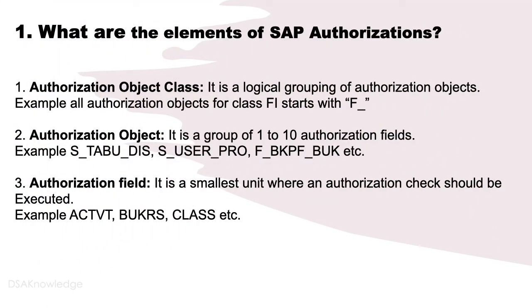What are the elements of SAP authorizations? Number 1: Authorization object class. It is a logical grouping of authorization objects. For example, all authorization objects for class FI start with F underscore.